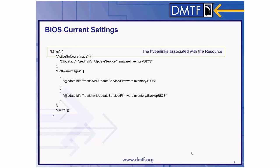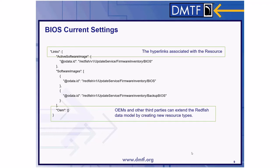The links property represents the hyperlinks associated with the resource as defined by that resource's schema definition. Inside the links, we have another object called OEM, where OEMs and other third parties can extend the Redfish data model by creating new resource types. The information and semantics of OEM resources are not defined in the Redfish standards, but the schema representing the data and the resource itself should conform to the specification.